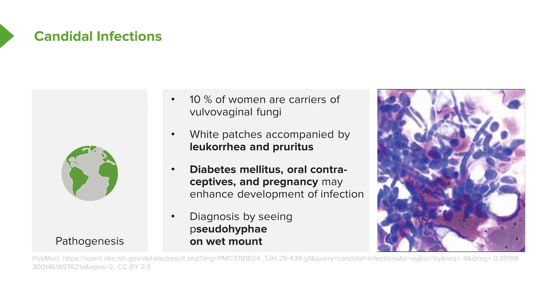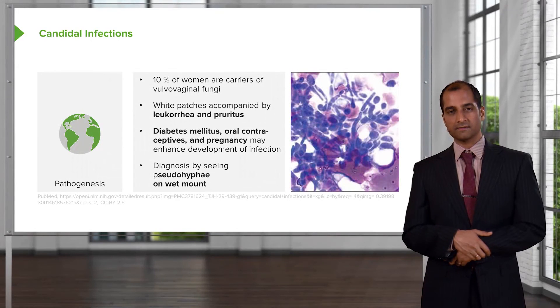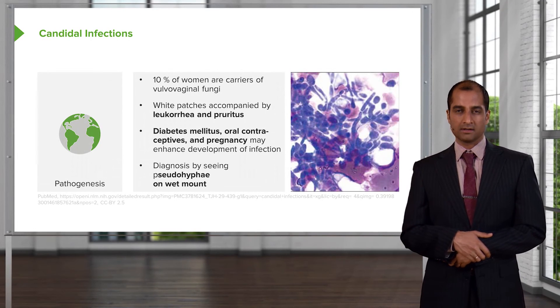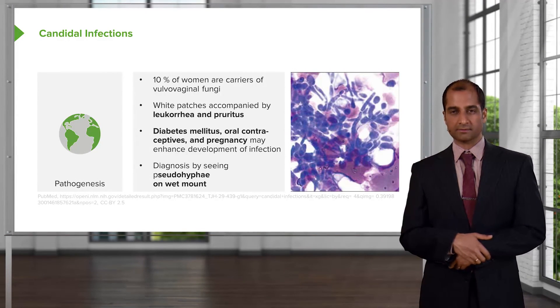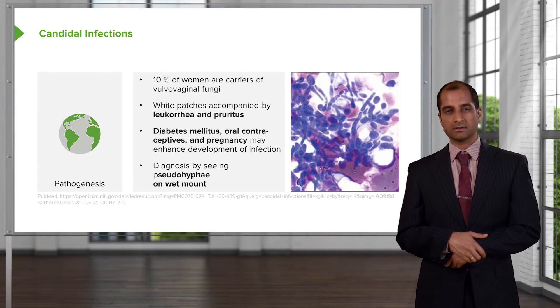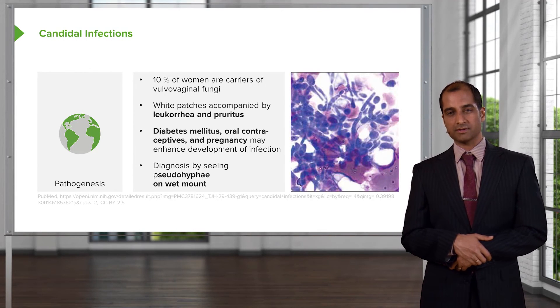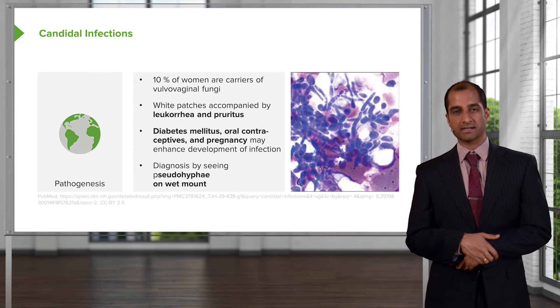What you're looking at here upon your wet mount would be pseudohyphae. Remember, these fungi do not contain true hyphae. They are yeast that have been elongated and so therefore you call this pseudohyphae. That is an important description — you either know it by description or you know it by picture, as you see here in the image.